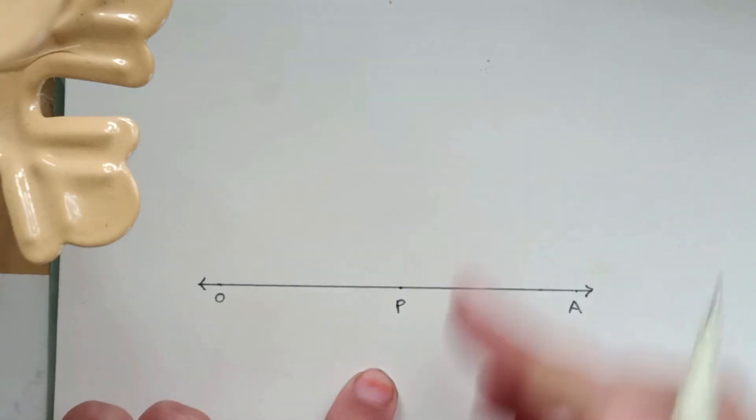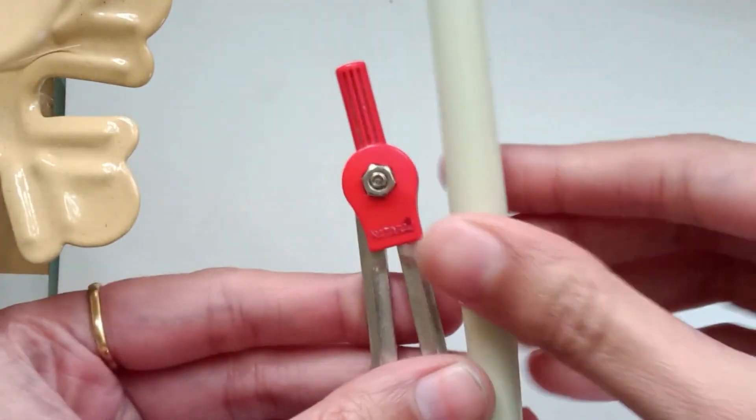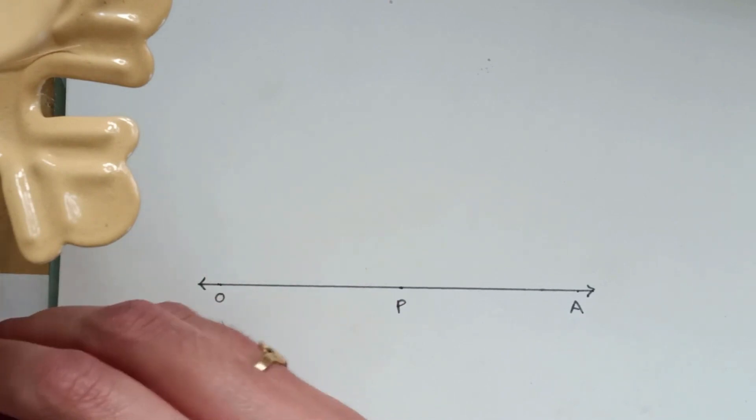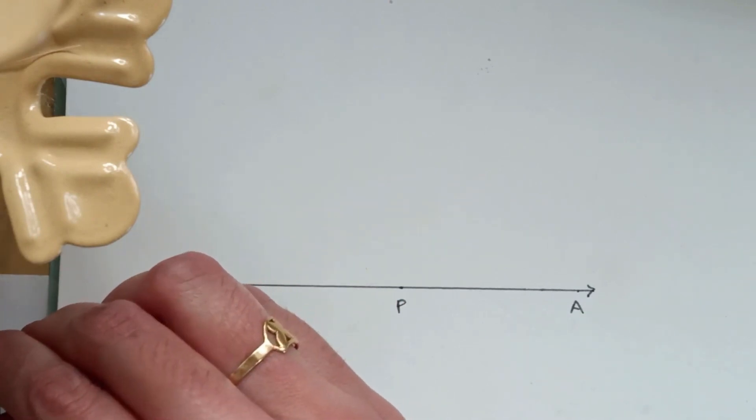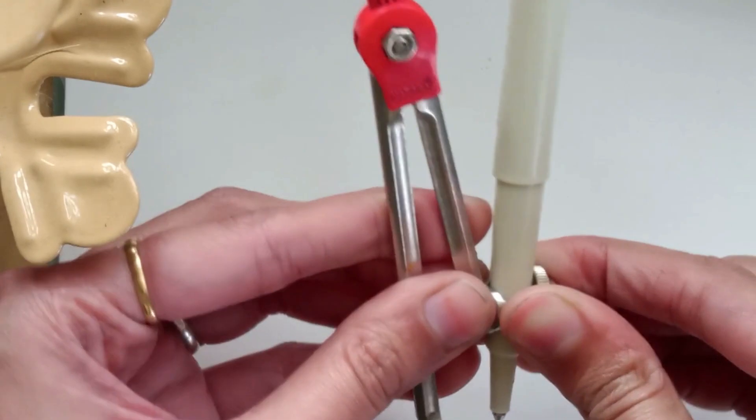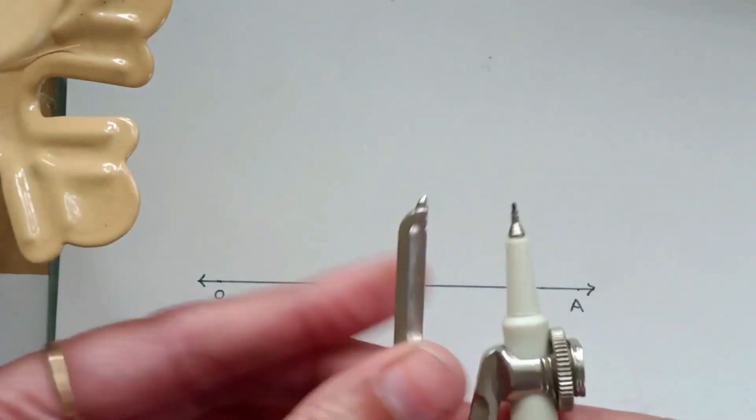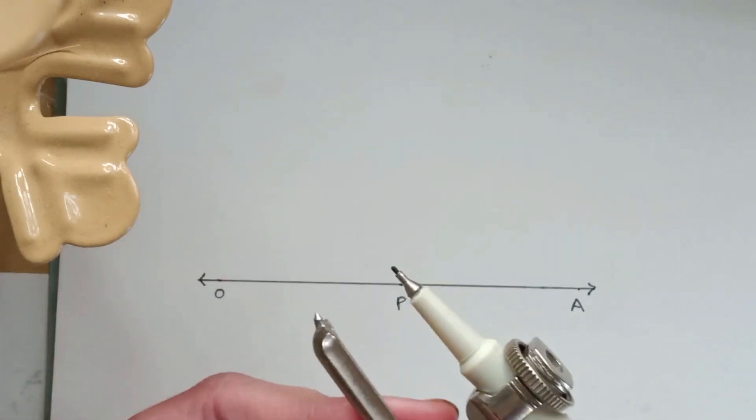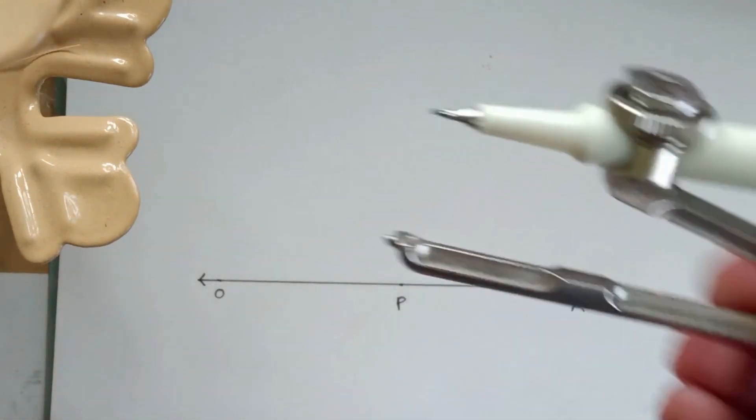And now we will draw a perpendicular line from P on this line OA. So take your compass and adjust a pen in the compass. Make sure it is correct. Make sure you mark all the points correct, both the points.